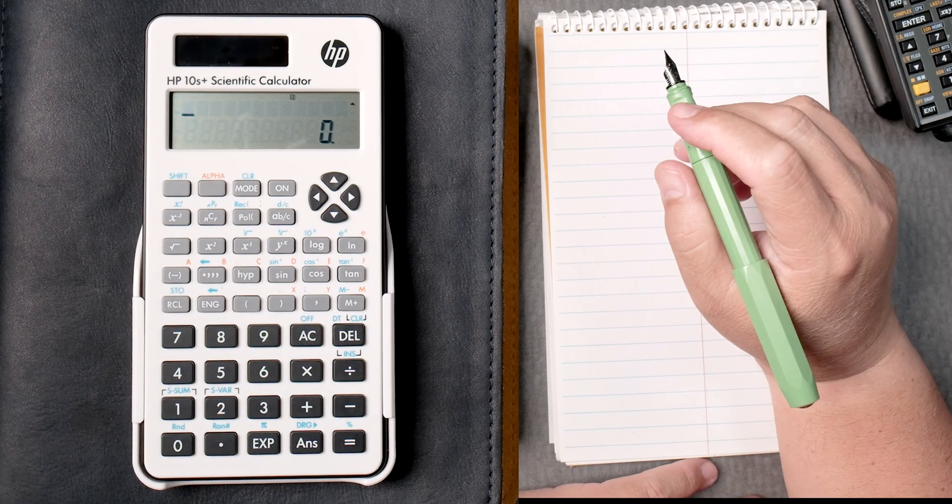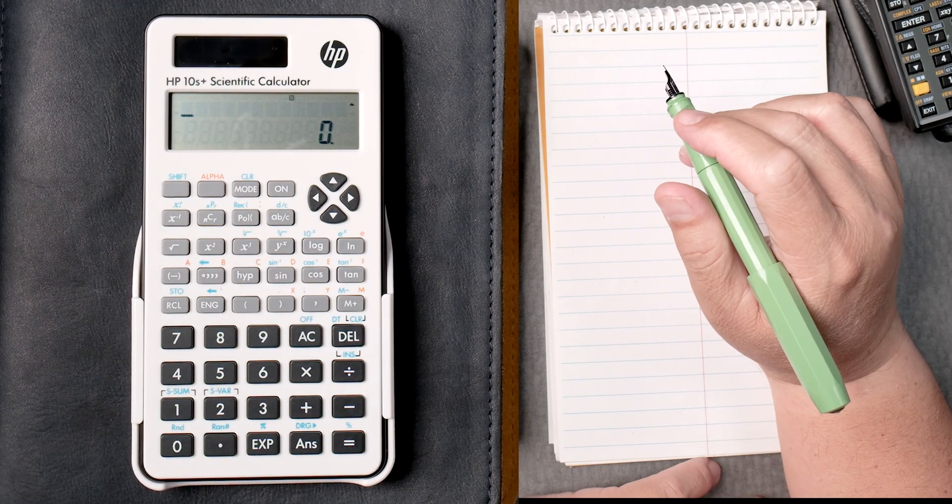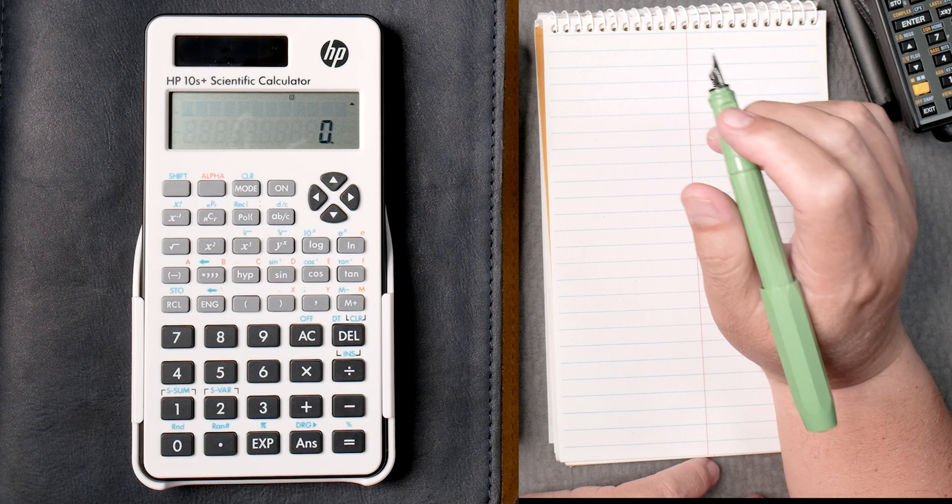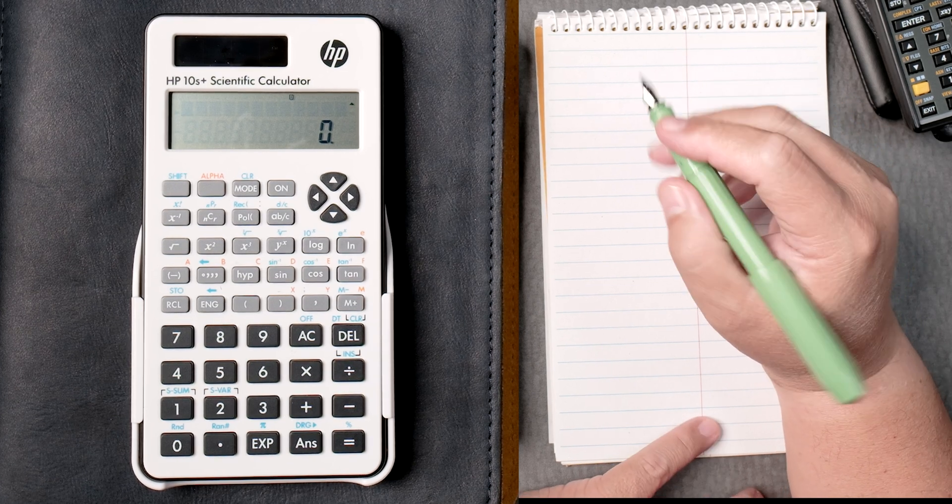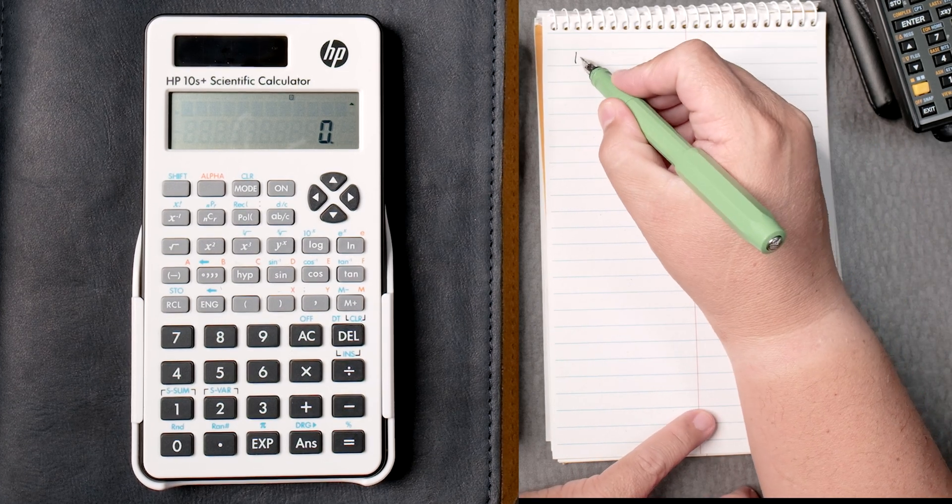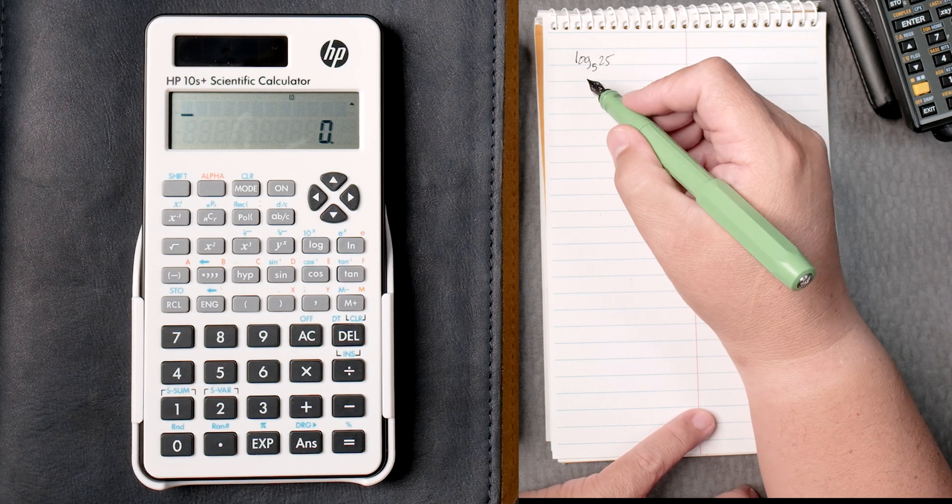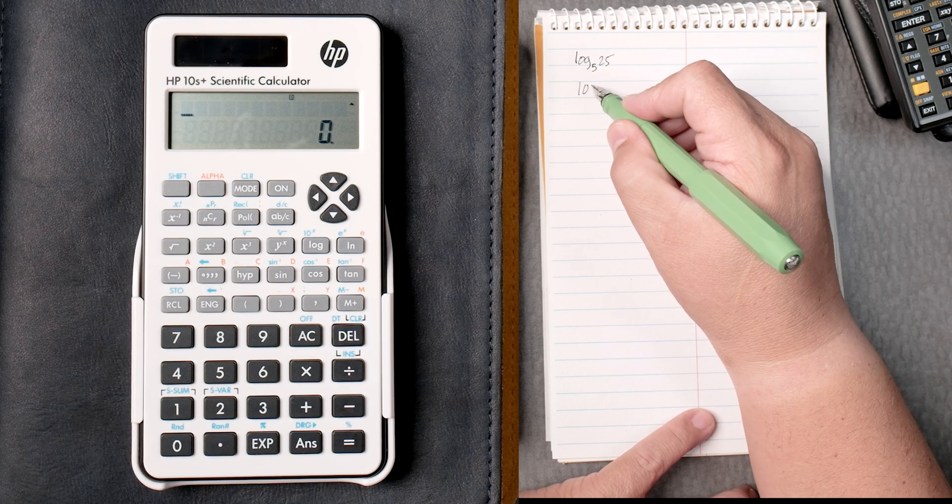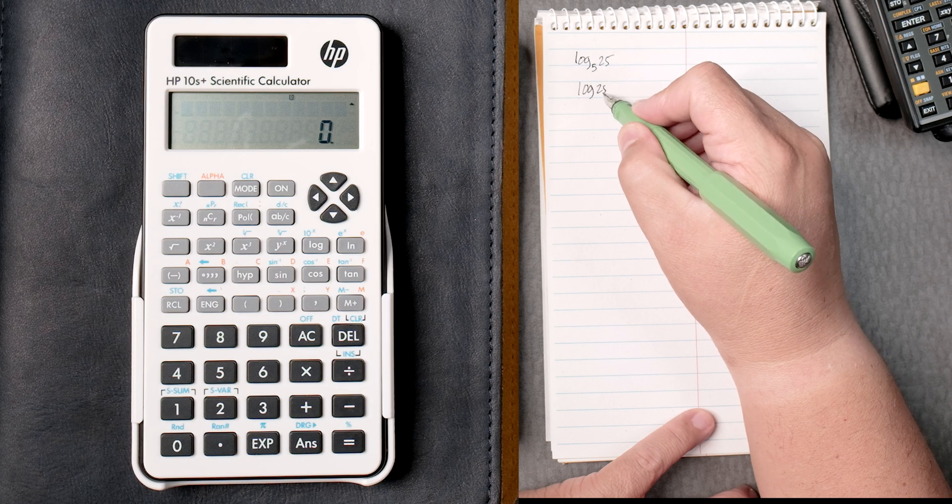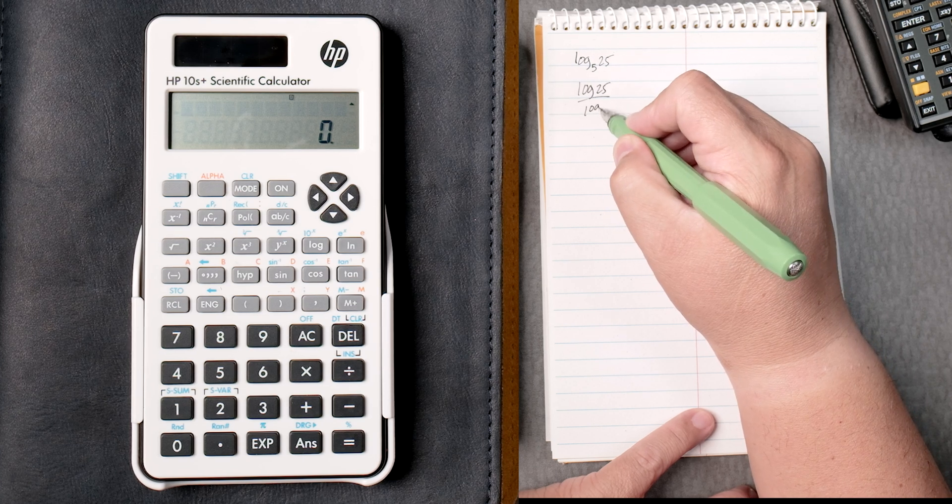This video is on the HP 10S plus scientific calculator for logs. Let's say you have the log of base 5, 25. Here you would say the log of 25 divided by the log of 5.